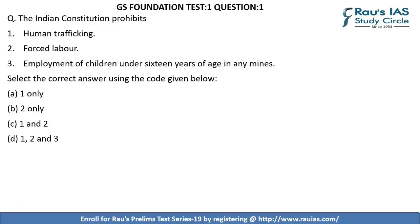Let's begin with the first question. It contains three statements: the Indian constitution prohibits (1) human trafficking, (2) forced labor, and (3) employment of children under 16 years of age in any mines or hazardous situations. The statements are indicative that they are covered under fundamental rights enshrined in Part Three of the Indian constitution.